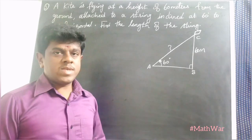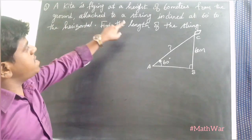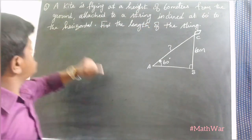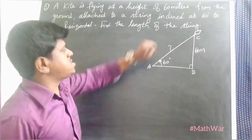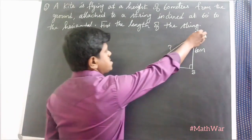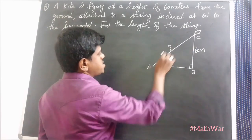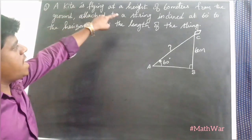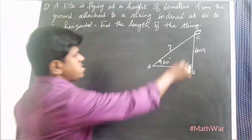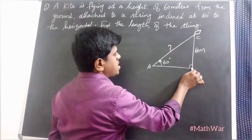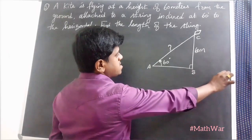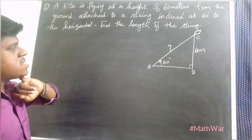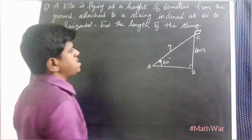Next question: A kite is flying at a height of 60 meters from the ground, attached to a string inclined at 60 degrees to the horizontal. Find the length of the string. The kite is at A, and AC is the string whose length we want to find. The height from the ground, CV, is 60 meters, and the inclined angle is 60 degrees.